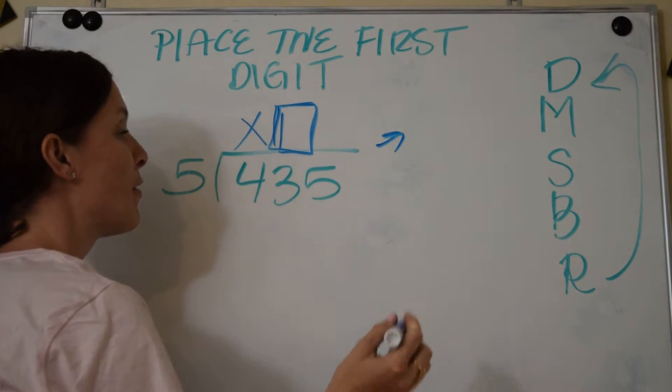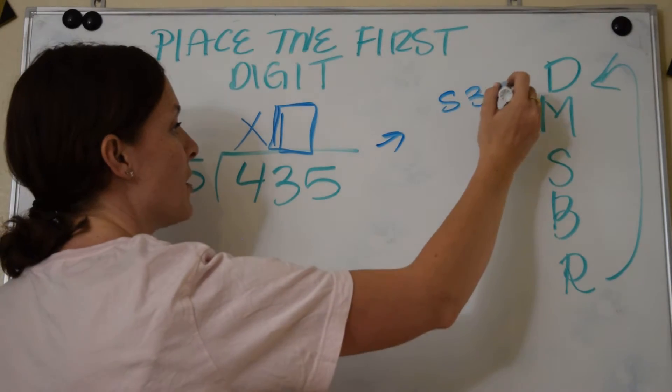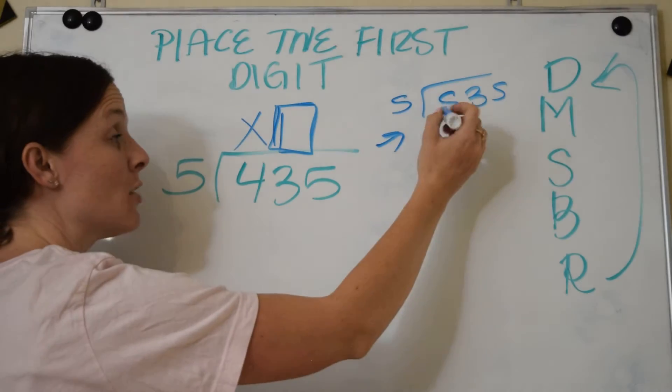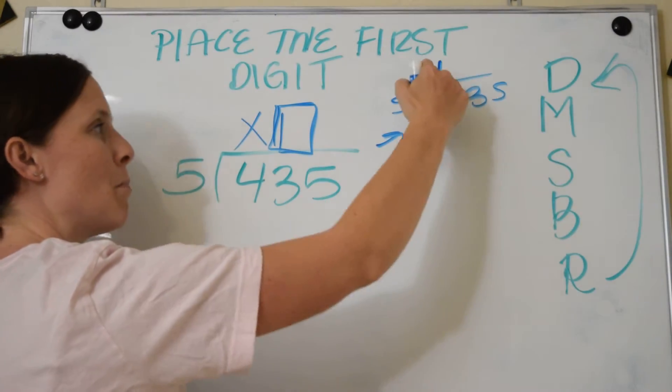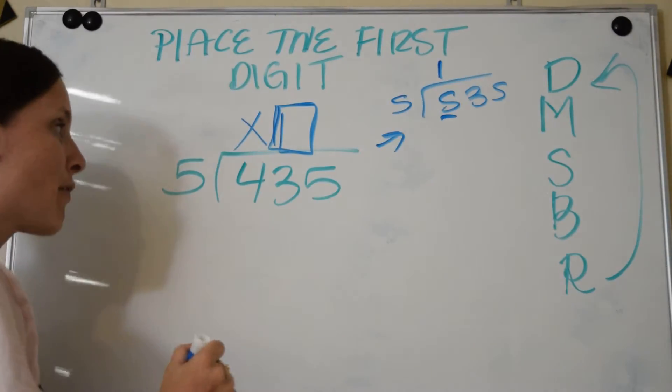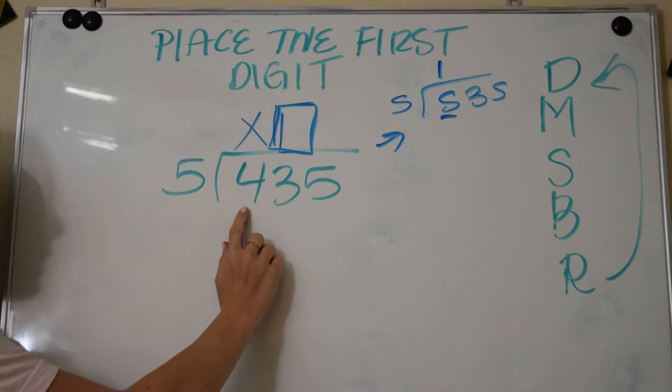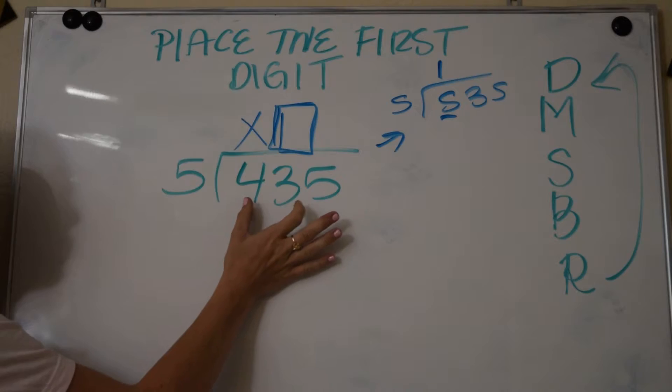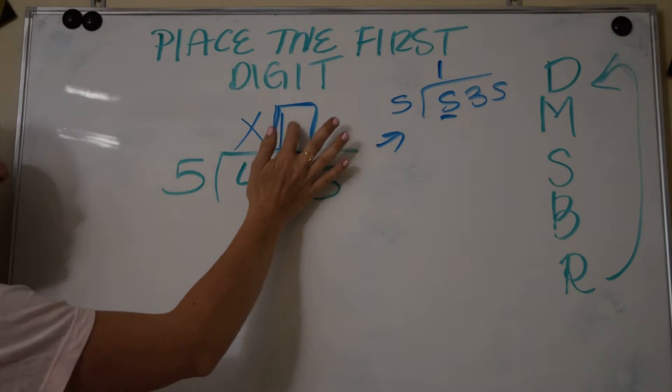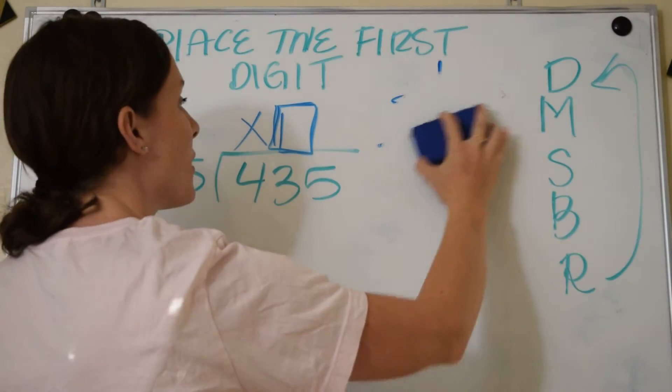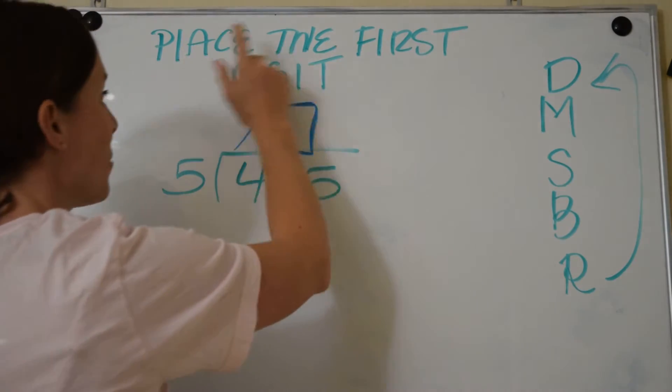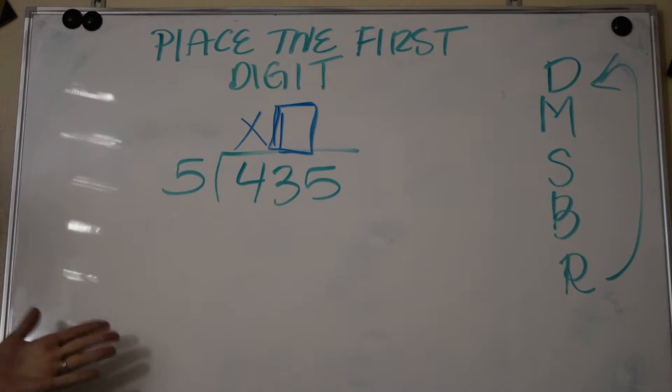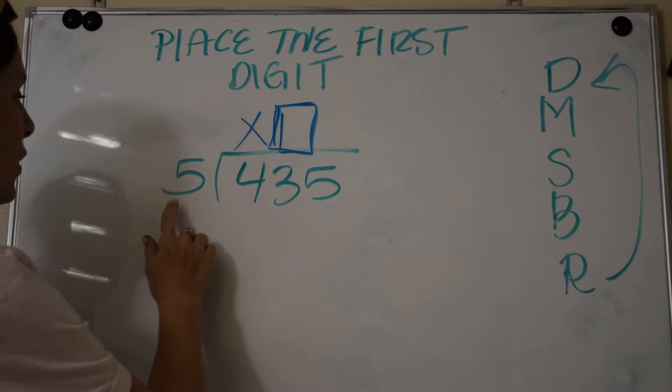Let me just show you how that was a little bit different from before. What if I had 535 divided by 5? Well, 5 can go into 5 that first digit, it can go in once, so we put the 1 right above the 5. But in this case, 5 cannot go into the first digit, so we have to bring it over and include it in this second digit and place it right there. So be very careful in this lesson about where you place that first digit. It's got to go above the right number.